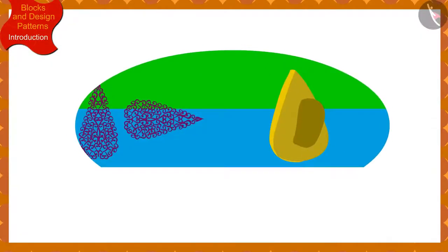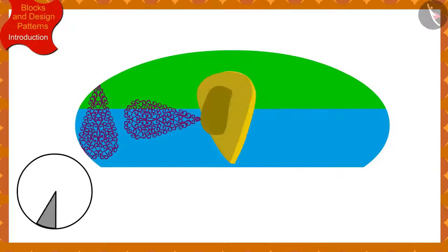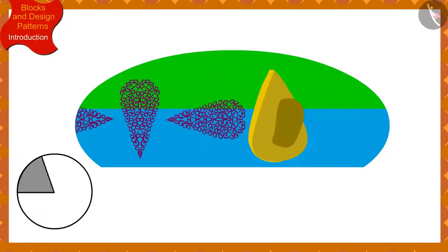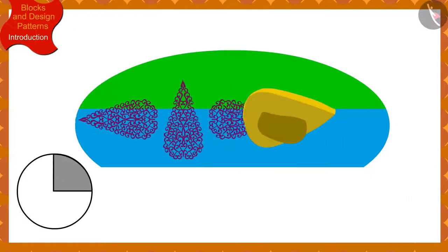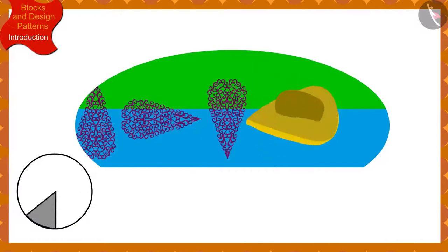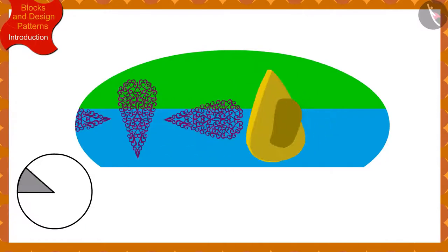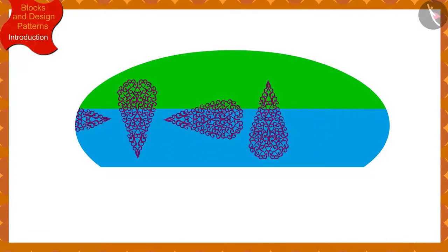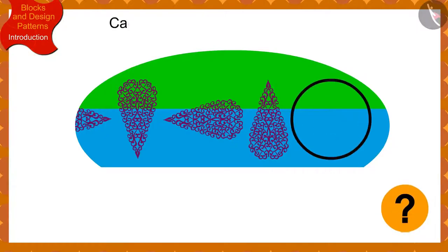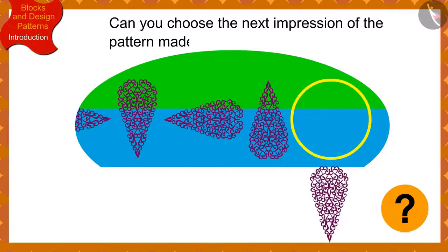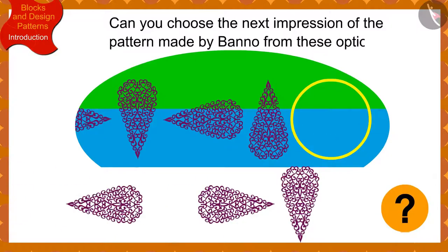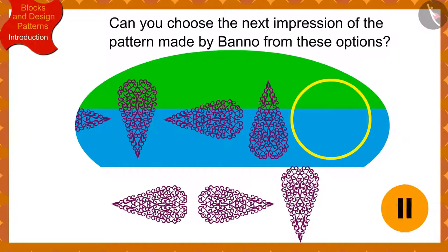Children, if Banno has made this design so far by rotating the block by a quarter in the clockwise direction every time, can you choose the next impression of the pattern from these options? If you wish to, you may stop the video and think of the answer.